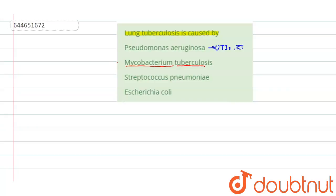The third option, Streptococcus pneumoniae, is a bacterium that can cause common cold-like fevers and diseases. The last option, Escherichia coli, is the most common bacterium present in the lower intestine of all humans and most mammals or warm-blooded organisms. So for this question, the correct answer is Mycobacterium tuberculosis.